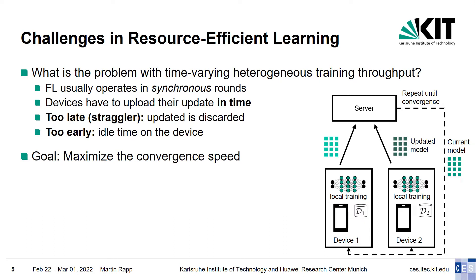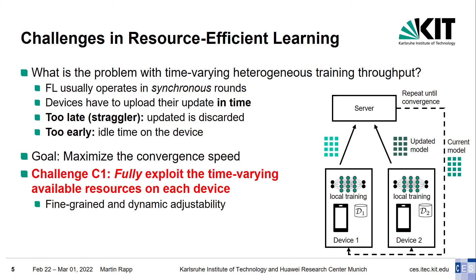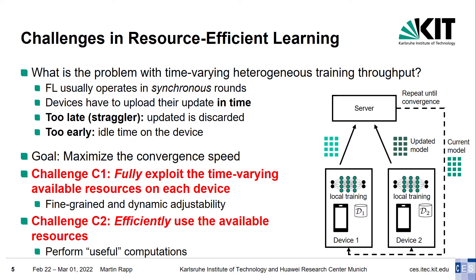Our goal is to maximize the convergence speed. To achieve this, we need to tackle two challenges. First, we need to avoid wasting resources, which means we need to fully exploit the time-varying available resources on each device. This has two implications: we need fine-grained adjustability of the resources used during training to match the available resources as close as possible, and we need to be able to dynamically and fast adjust the resources to react to sudden changes in the resource level. The second challenge is to efficiently use the available resources — to perform the most useful computations with respect to the goal — in other words, to improve the model as fast as possible with the limited available resources.